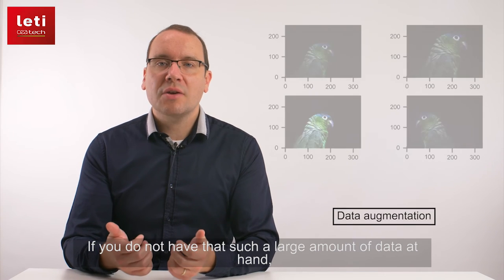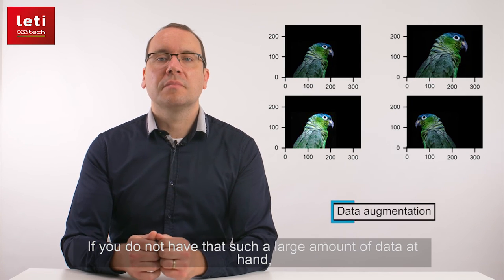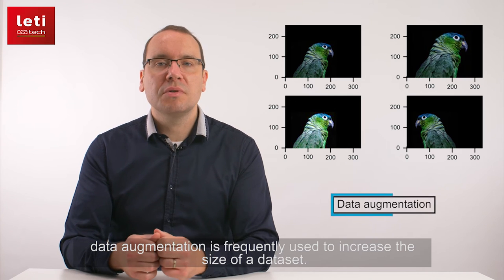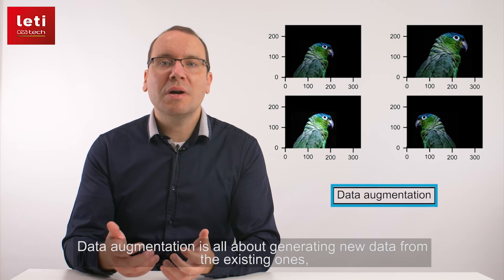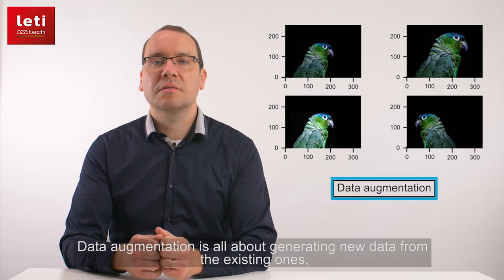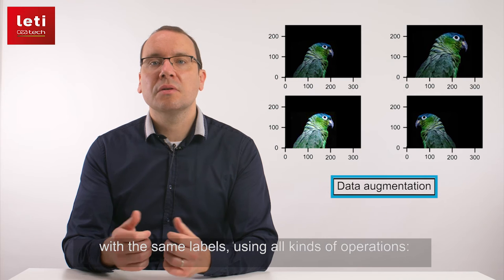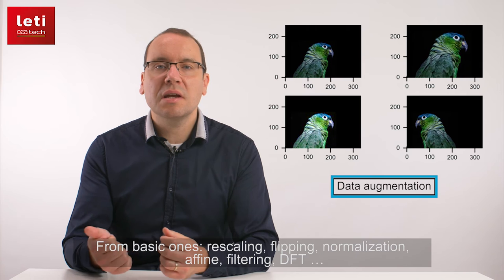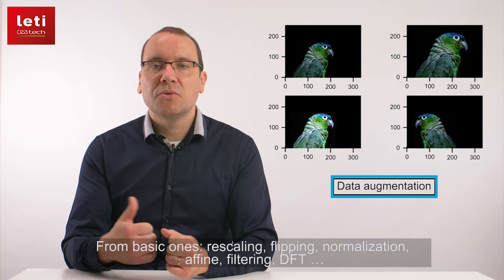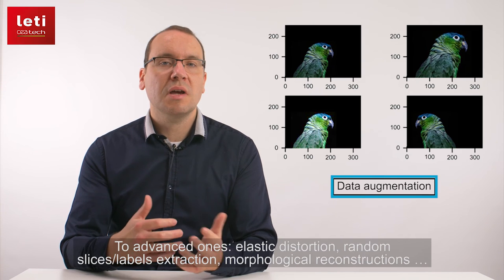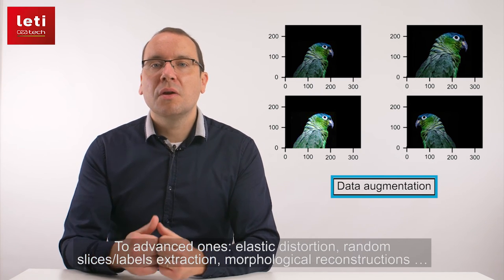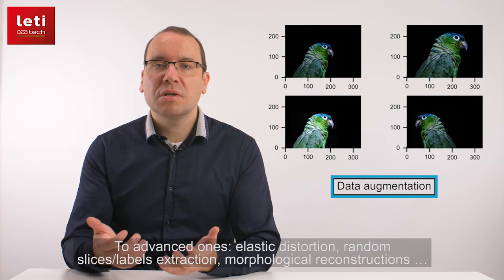If you do not have such a large amount of data at hand, data augmentation is frequently used to increase the size of a dataset. Data augmentation is all about generating new data from the existing ones, with the same labels, using all kinds of operations — from basic ones such as rescaling, flipping, normalization, affine transformations, filtering, DFT, and so on and so forth, to advanced ones like elastic distortion, random slices, unlabeled extraction, or morphological reconstructions.